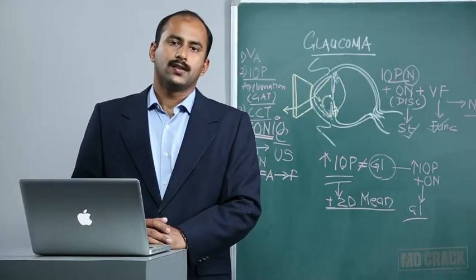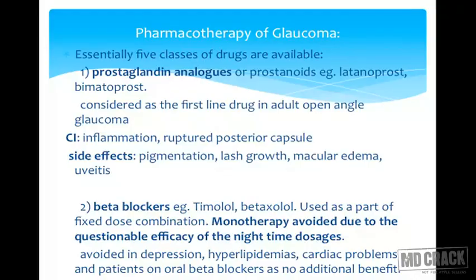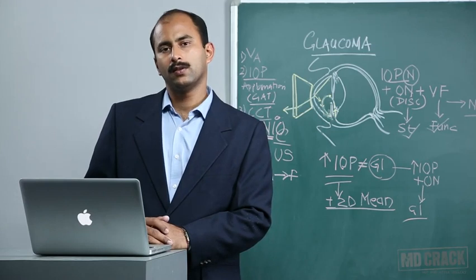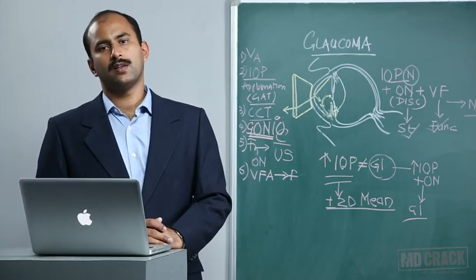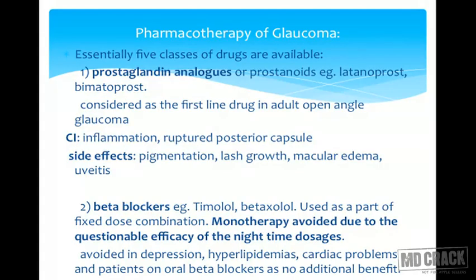First-line drugs are the prostaglandin analogues, which are first-line treatment for chronic simple or open angle glaucoma, producing an approximate 30% drop in intraocular pressure from baseline. Contraindications include inflammation, as they are pro-inflammatory, and in ruptured capsule cases where inflammatory mediators may produce macular edema. Ruptured capsule may be pre-therapy due to YAG capsulotomy after cataract surgery or from posterior capsular rupture during phacoemulsification. Side effects notably include skin pigmentation, lash growth, macular edema, and worsening of existing uveitis. They are contraindicated in history of herpes simplex or uveitic patients — a relative contraindication.